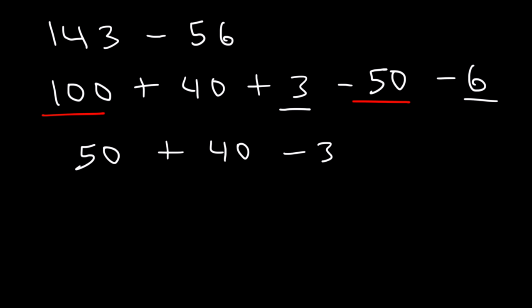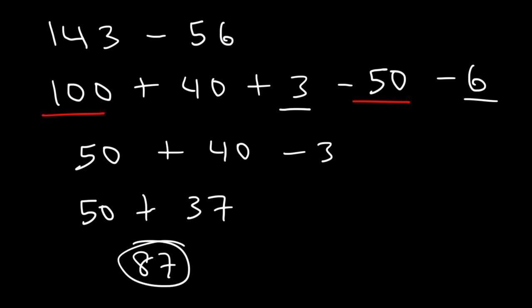40 minus 3 is 37. And 50 plus 37 is 87. So that's your answer for this example.